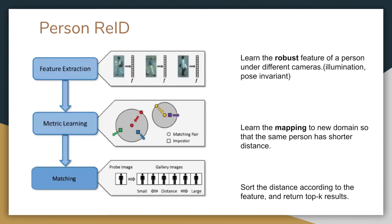There are several steps for person re-ID. First of all, is to learn the robust feature of a person under different cameras, regardless of illumination and pose change. Second, learning the mapping to a new domain so that the same person has a shorter distance. Thirdly, sort the distance according to feature and return top-K results.